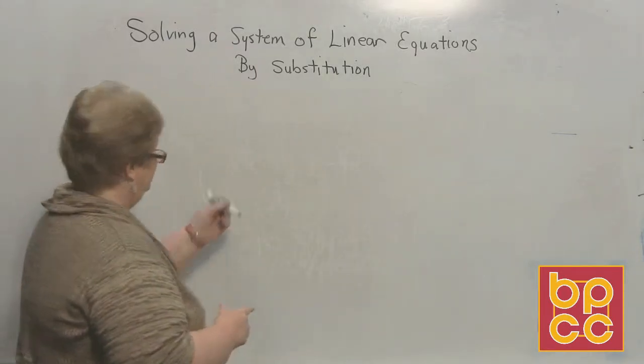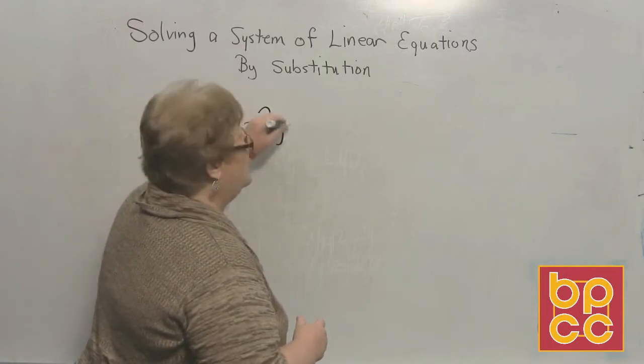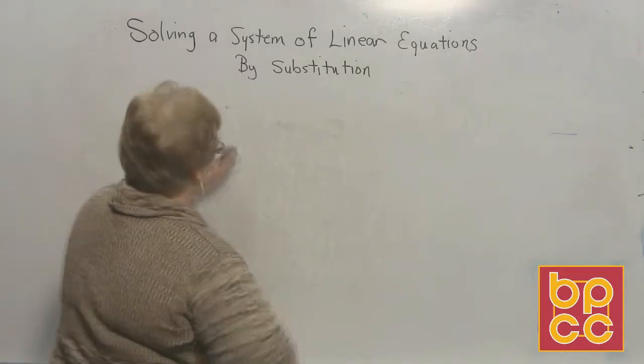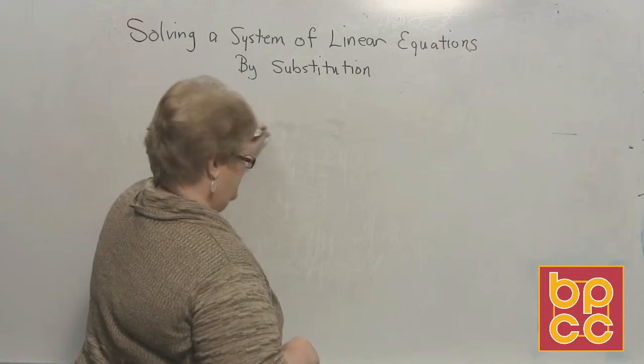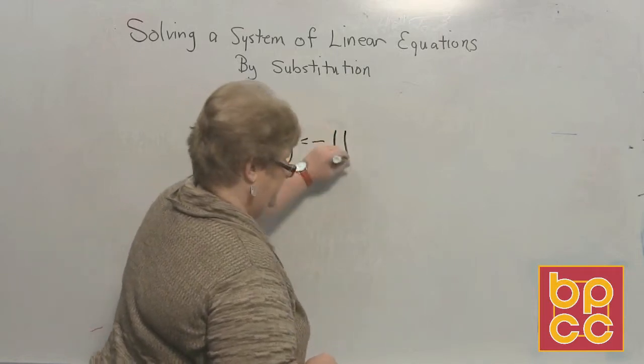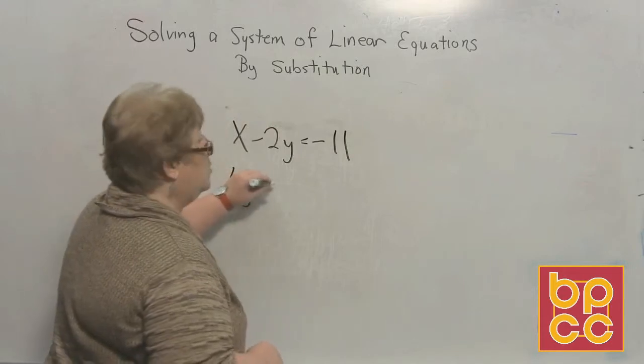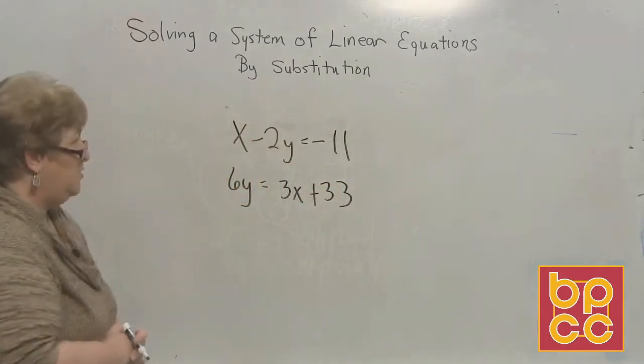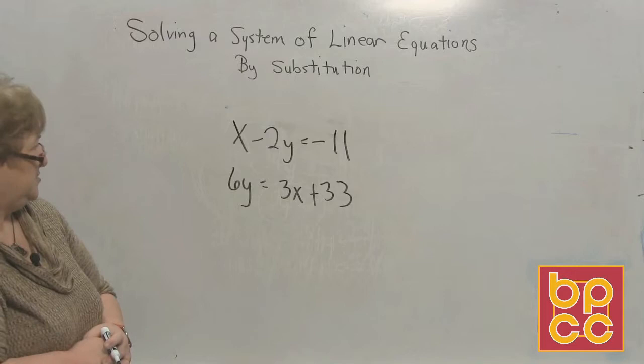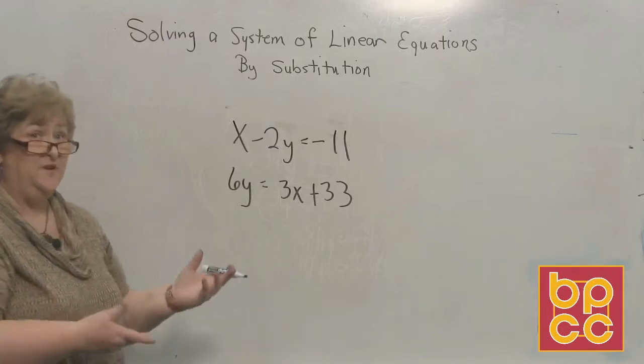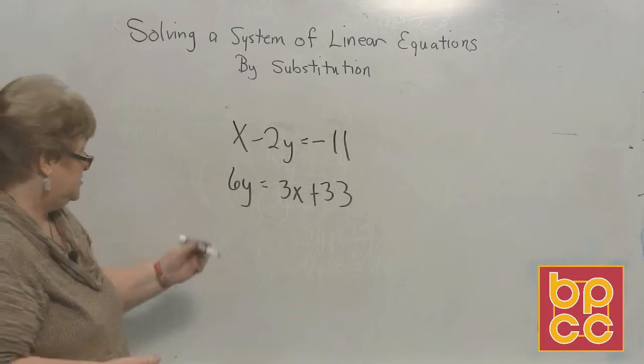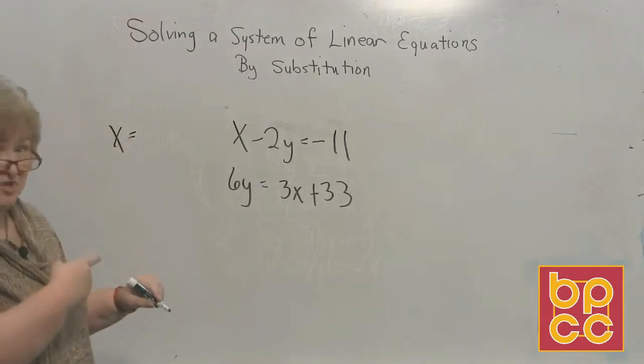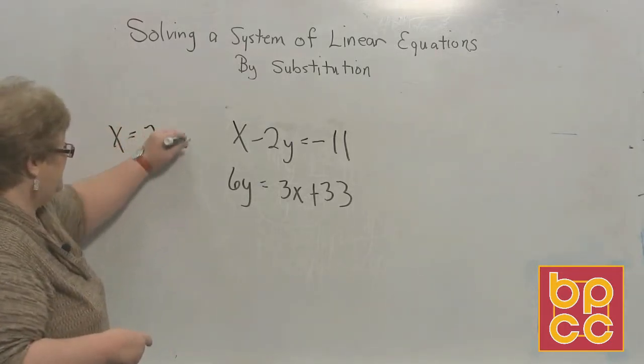Last one. Let's go with x minus 2y equal negative 11 and 6y equal 3x plus 33. X minus 2y equal negative 11. 6y equal 3x plus 33. I need the x or y by itself. It appears that x is the one that's going to be most available. Let me just put it right here.